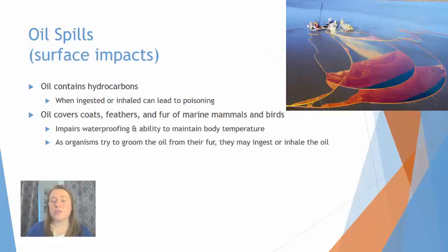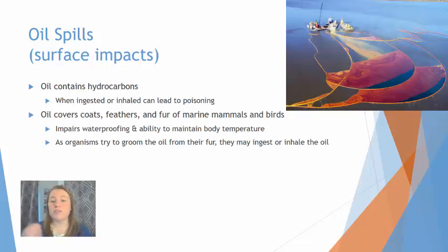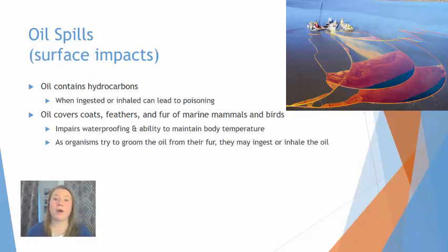Oil spills also impact aquatic and marine ecosystems. They have surface impacts, subsurface impacts, and shoreline impacts. On the surface, this oil is going to cover the feathers, fur, and coats of marine mammals and birds. This oil coating impacts waterproofing and the ability for that organism to maintain its own body temperature. Many of these marine organisms will try to groom themselves to remove that oil, but if they inhale or ingest any of it, it can poison the organism and lead to death.